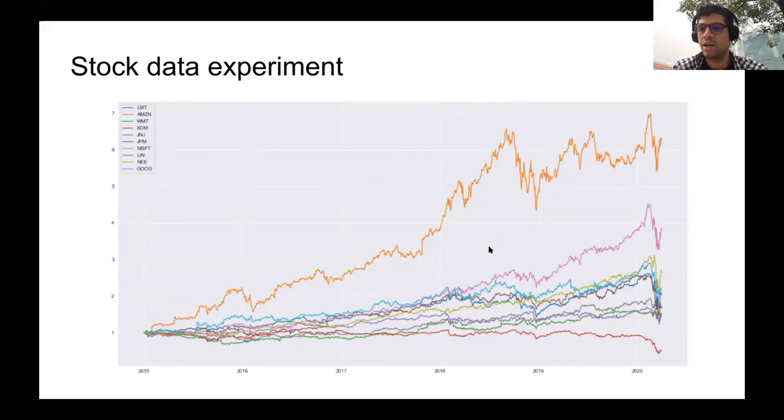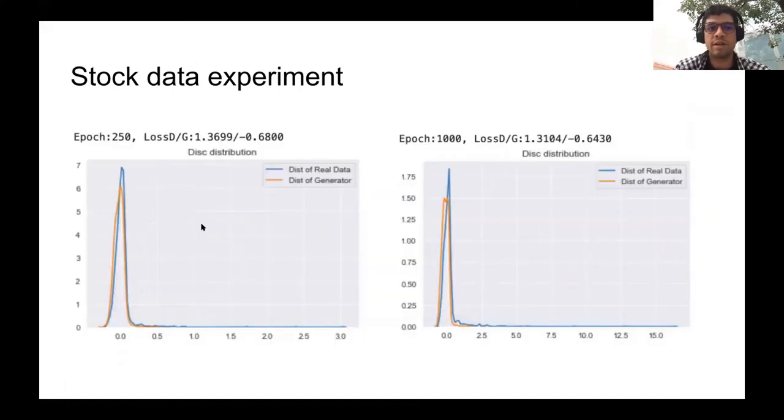We're going to see how the generator performs on learning the empirical data distribution. Here we conduct the learning using that vanilla algorithm with the help of code provided by the professor. As you can see here at epoch 250—and by epoch I mean a whole pass on the true dataset—the generator is already performing fairly well on understanding the distribution of the real data, and at epoch 1000 it's getting better and better.